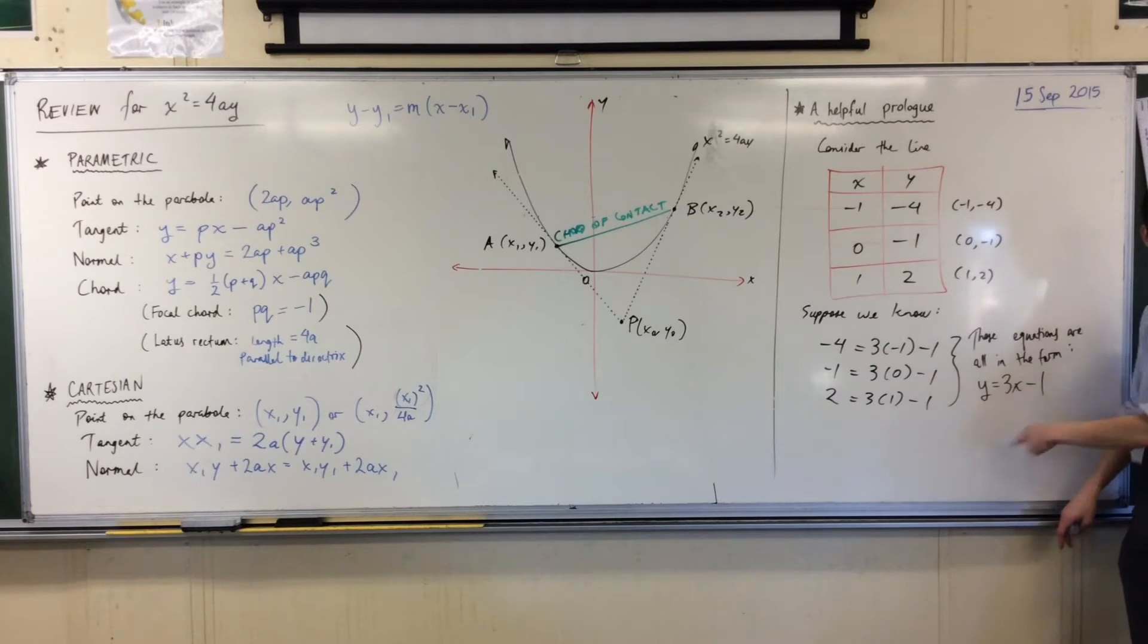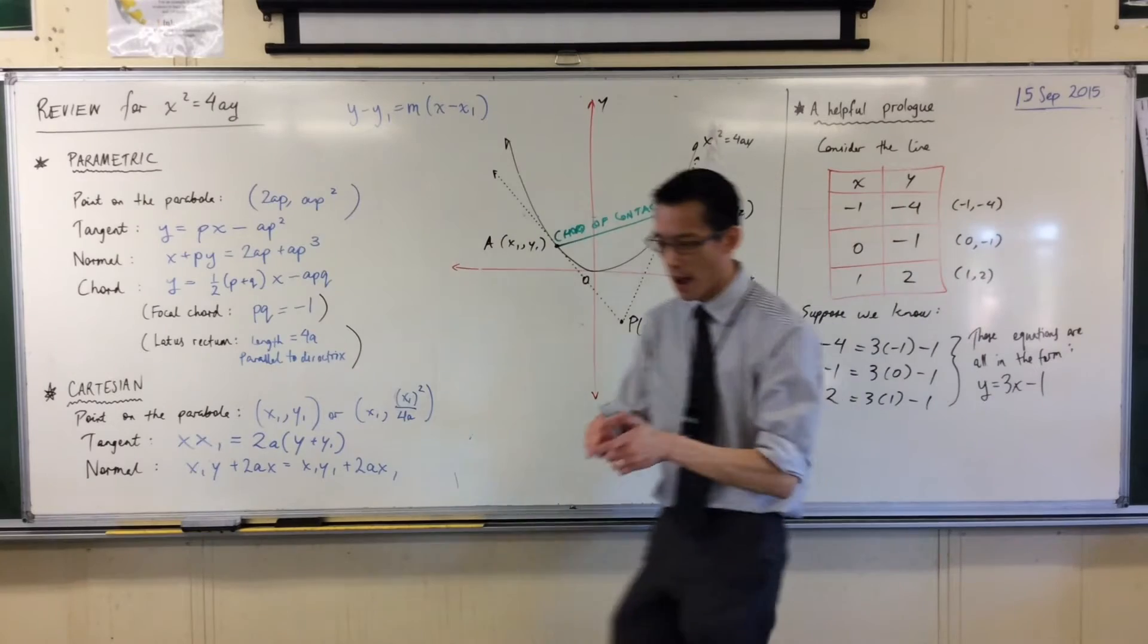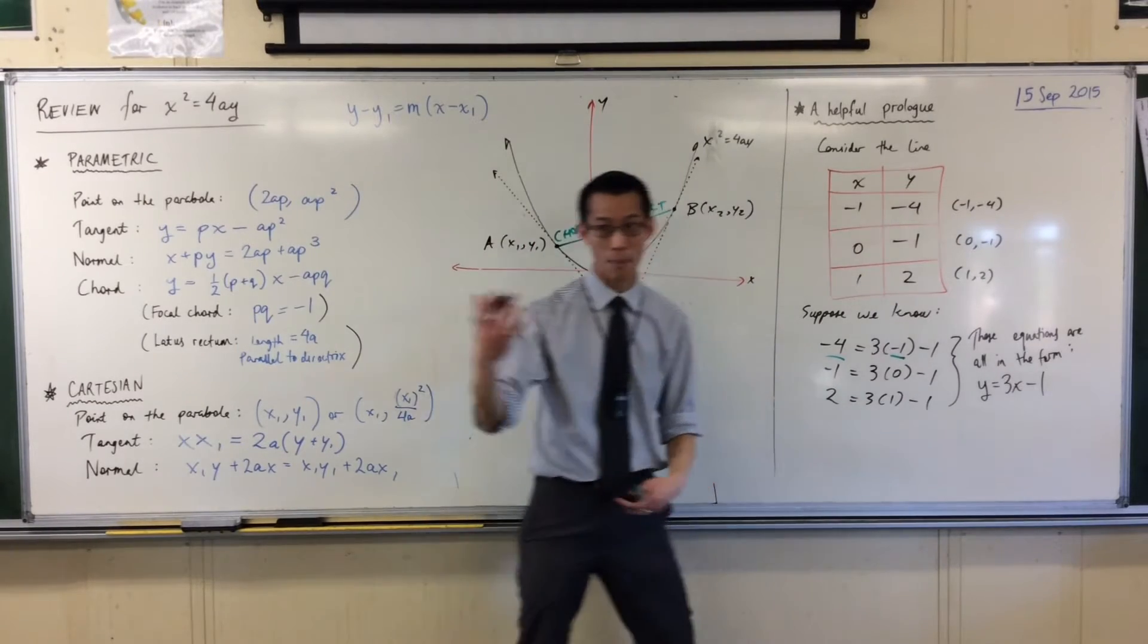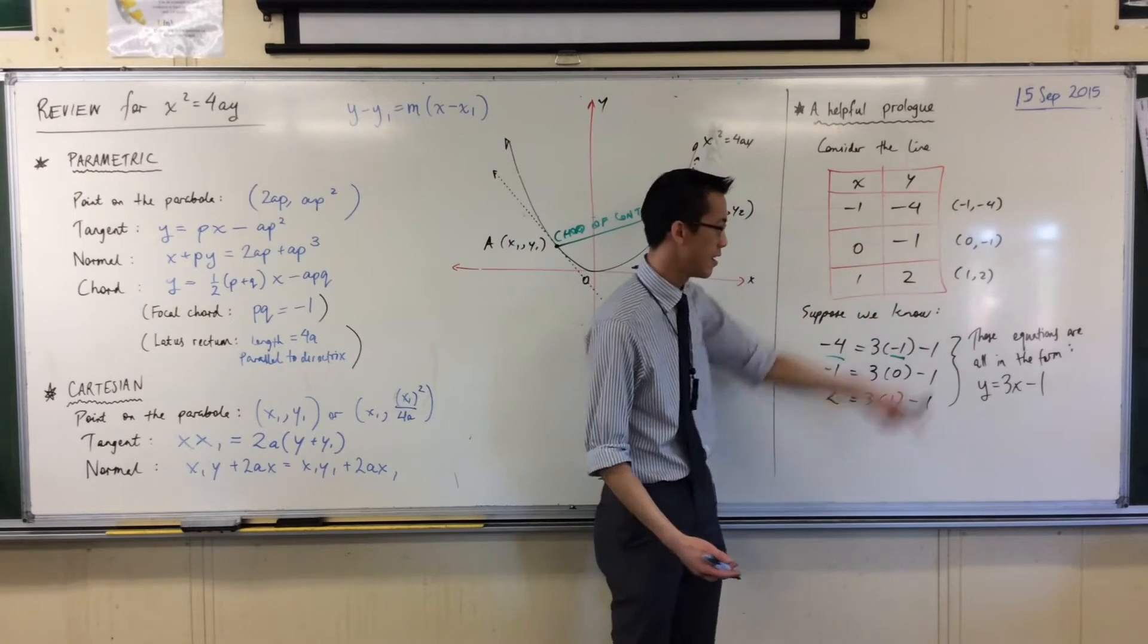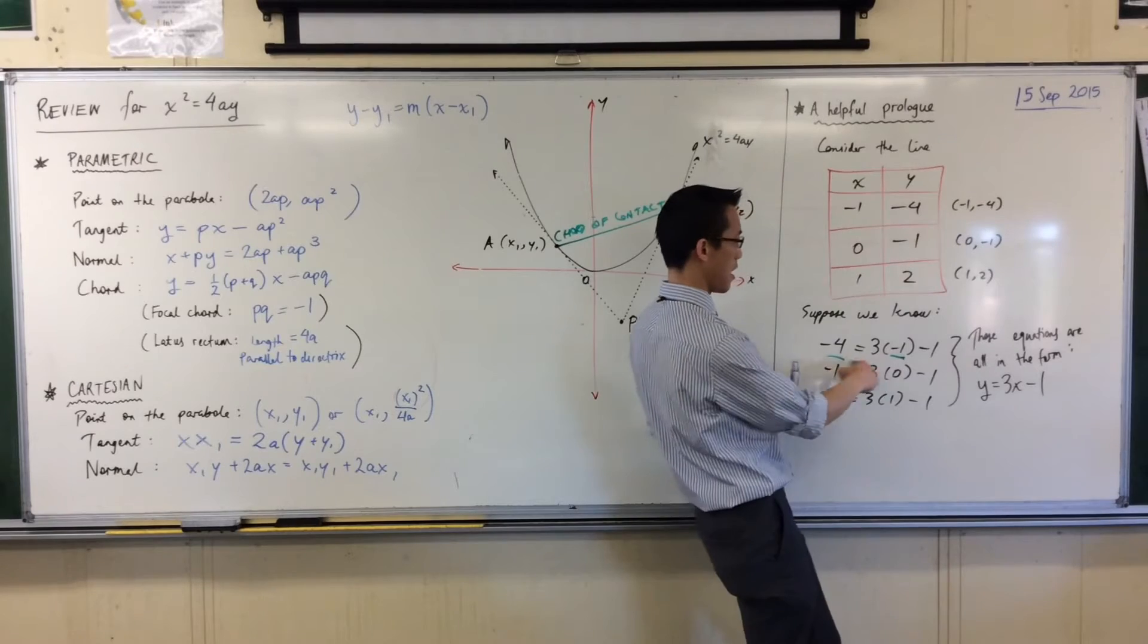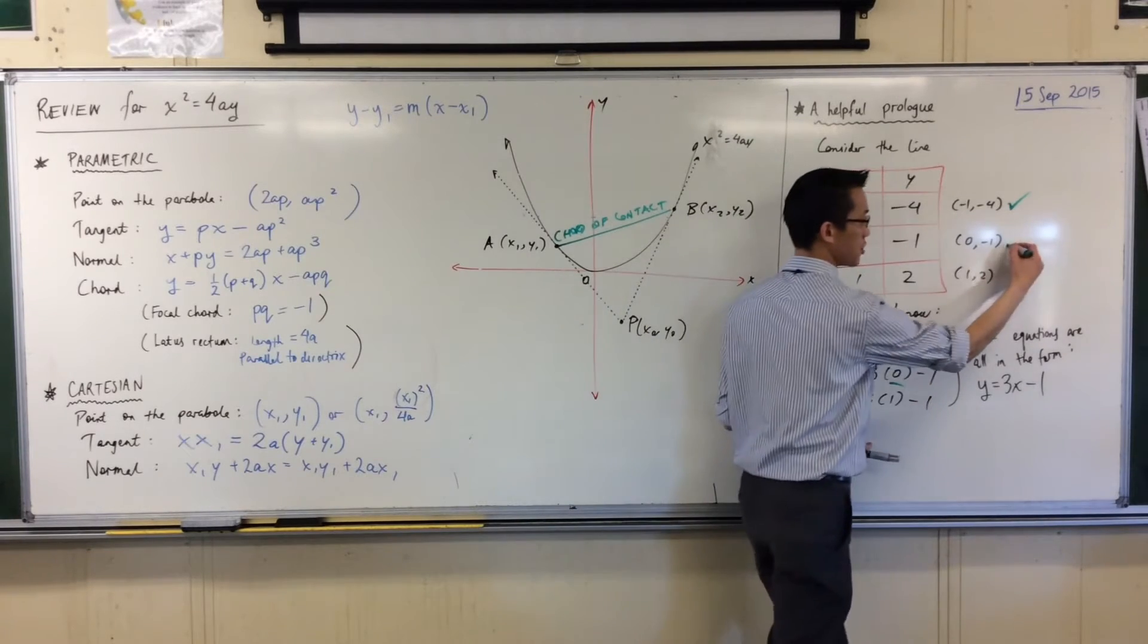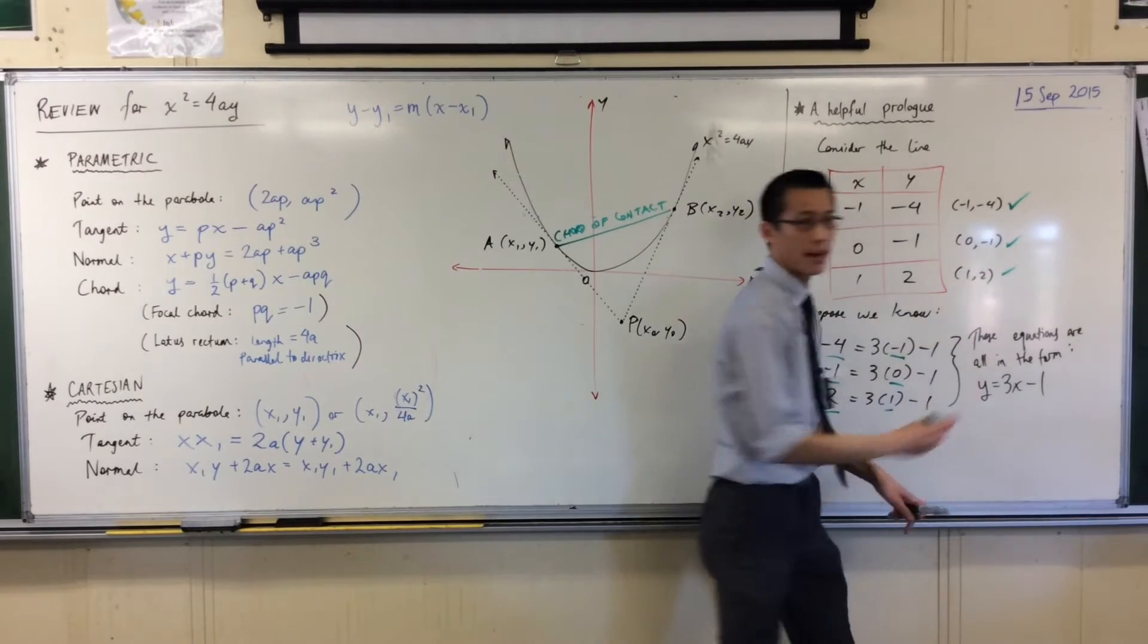But not only are they in this format, the particular values for x and y, because they're always paired up, I can write them in this way. The normal way I would pair up an x and y is in writing coordinates. So these are all in the form y equals three x minus one for (-1, -4), which is this guy, in the form (0, -1), which is this guy, and in the form (1, 2), which is this guy.